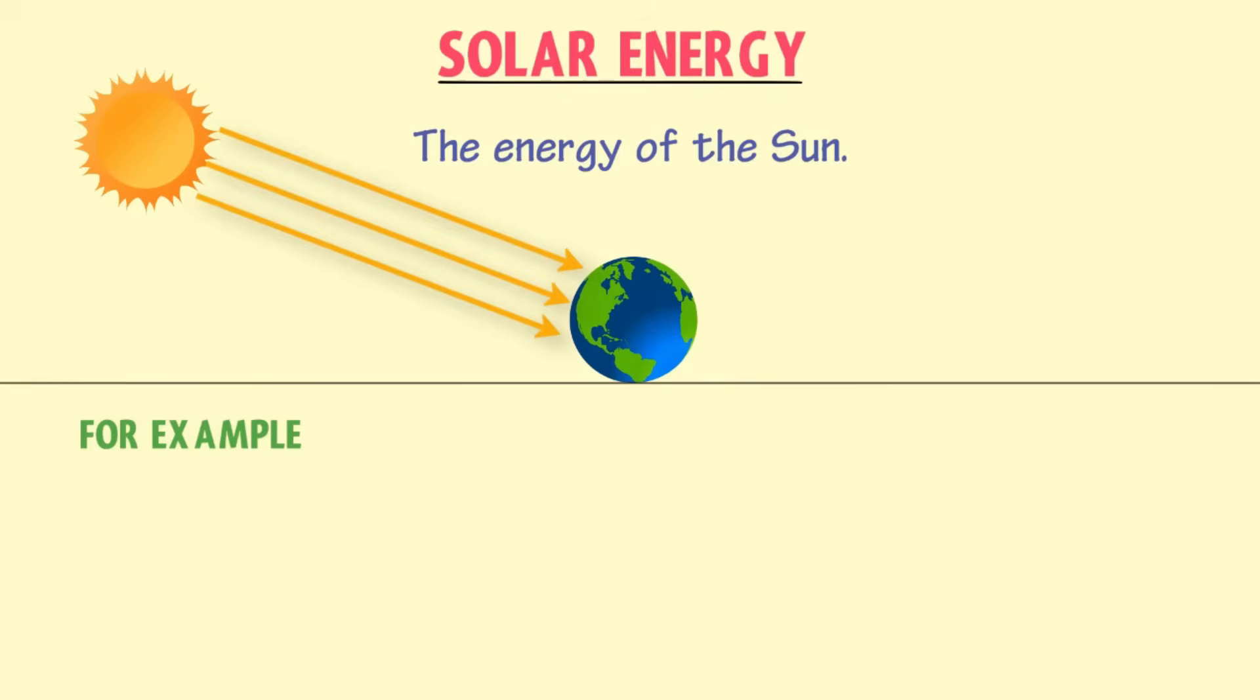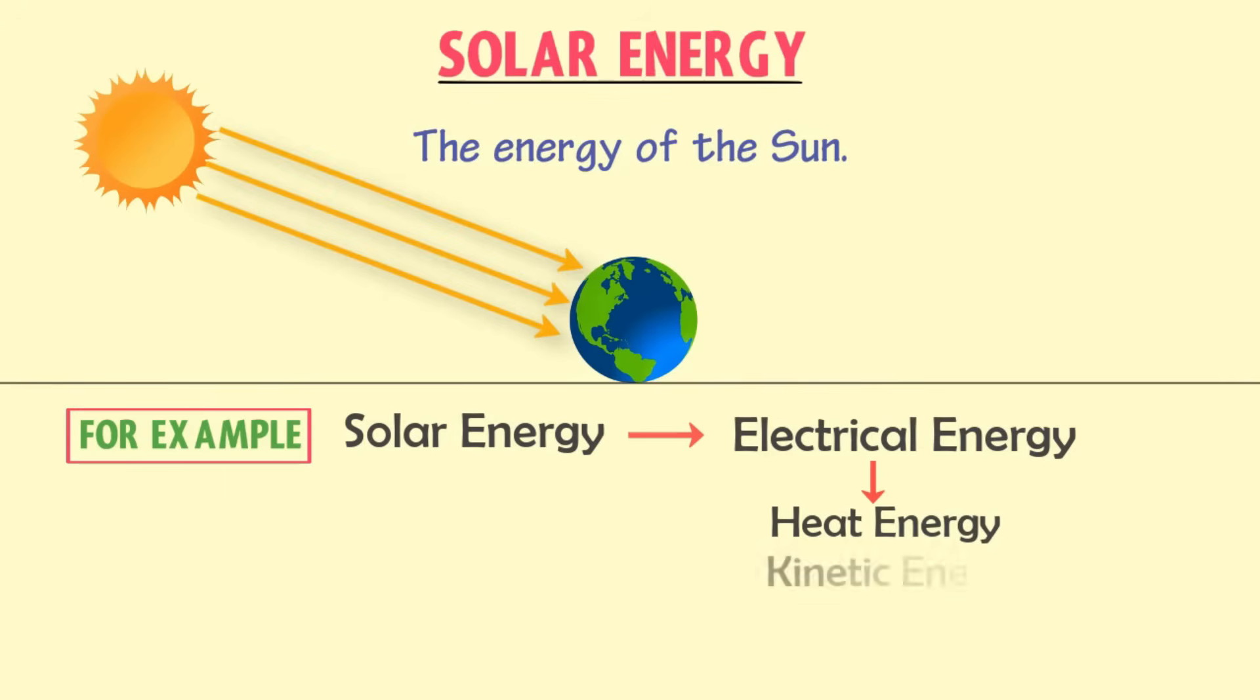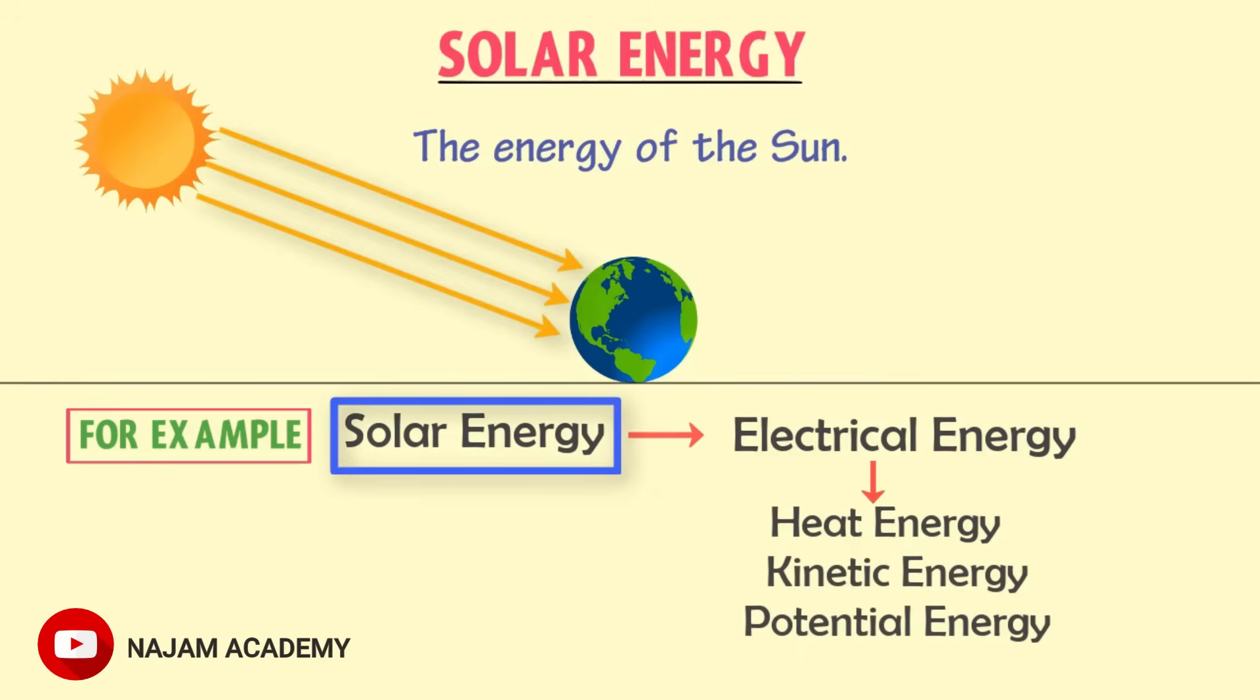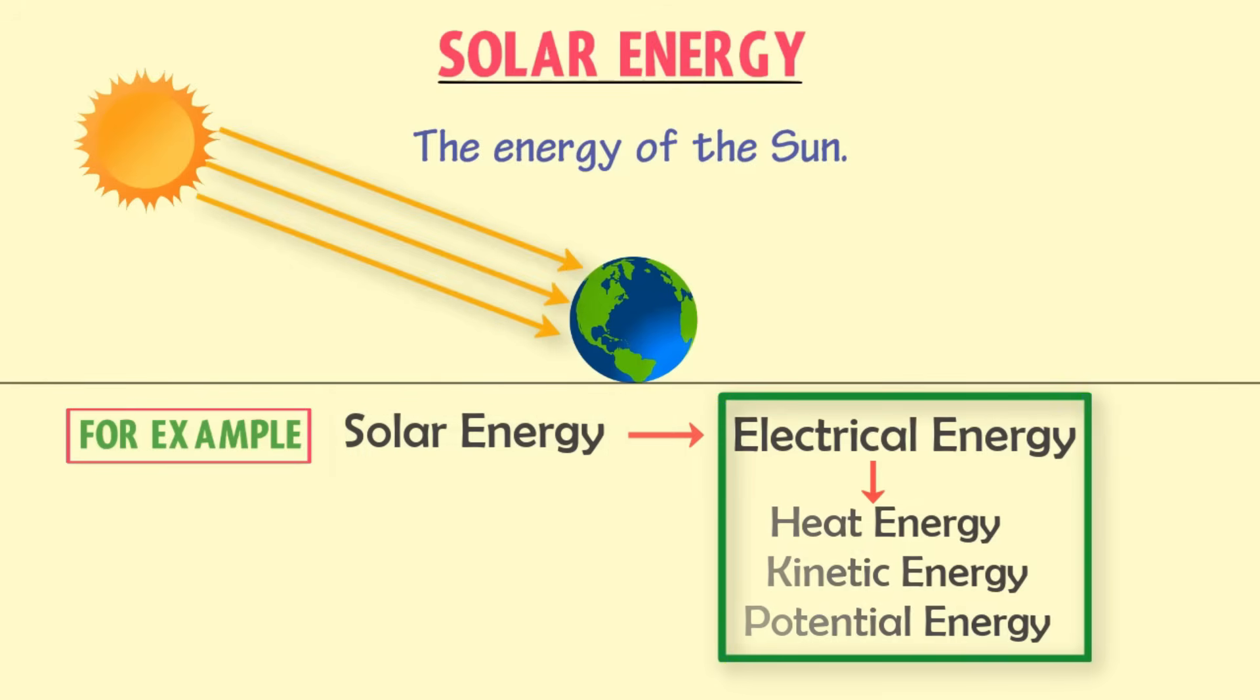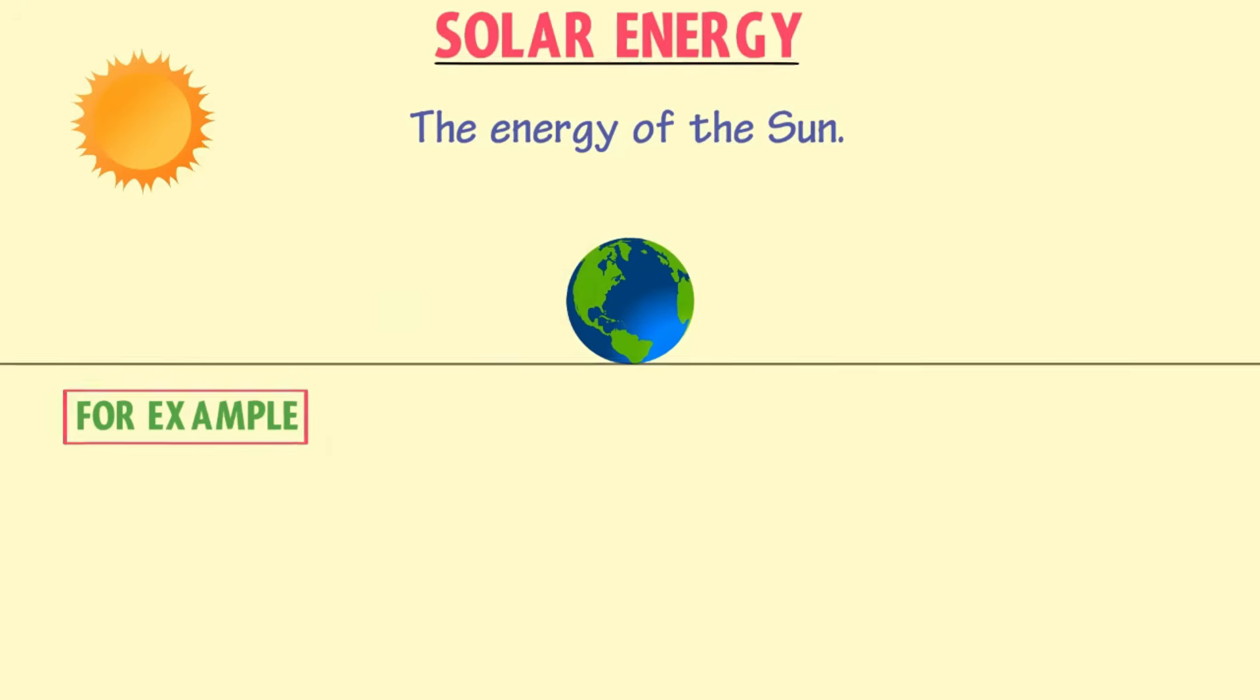For example, we can convert solar energy into electrical energy. And then, we can convert electrical energy into heat energy, kinetic energy, potential energy, etc. Hence, solar energy is the chief source of energy, which can be easily converted into other useful forms of energy.